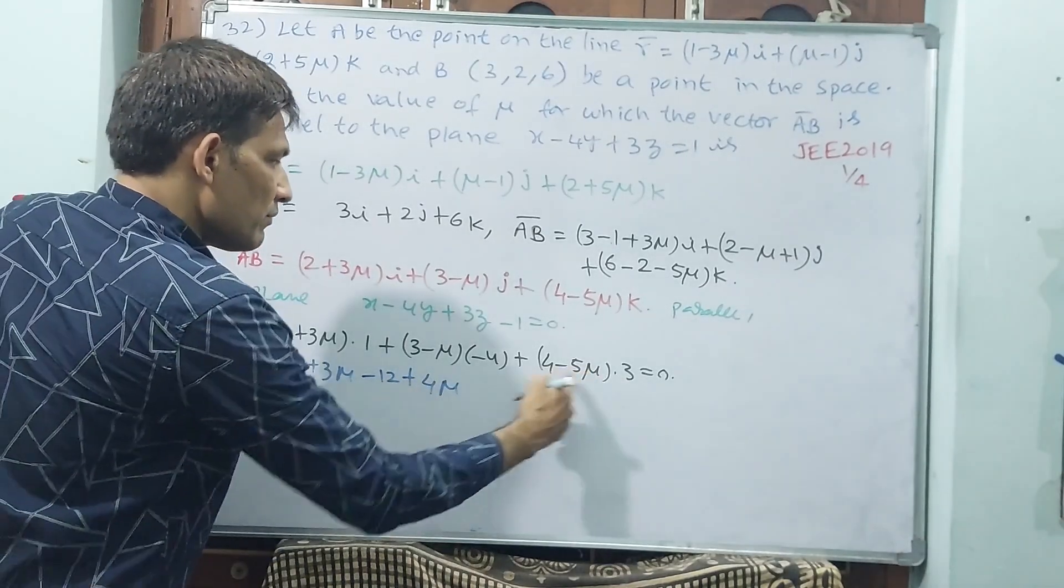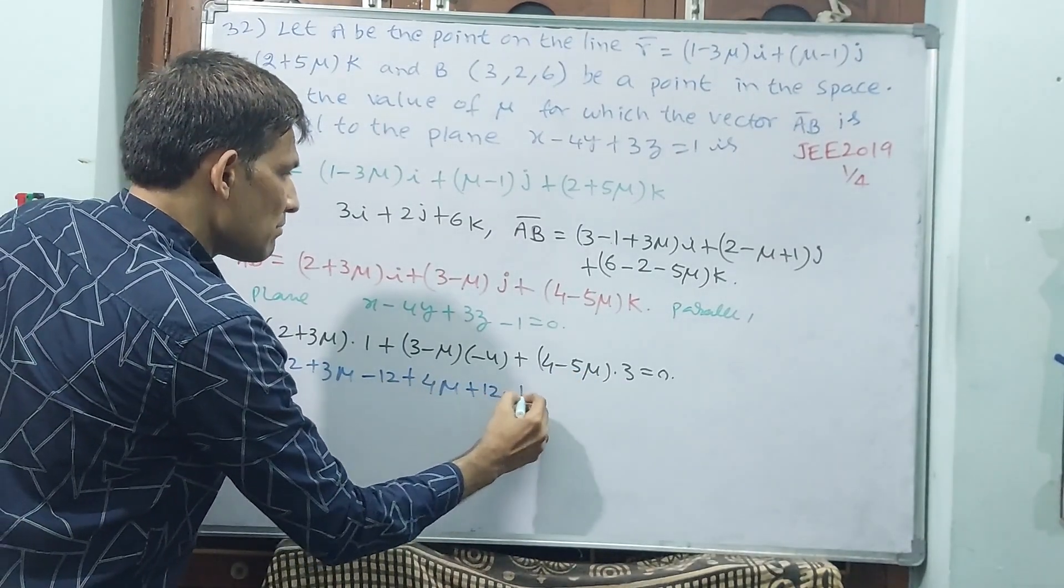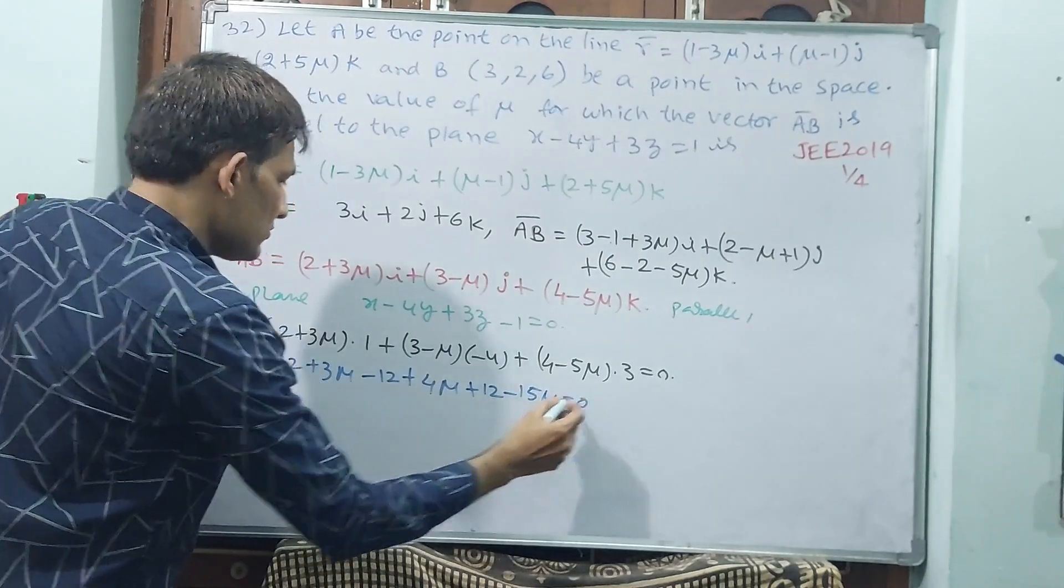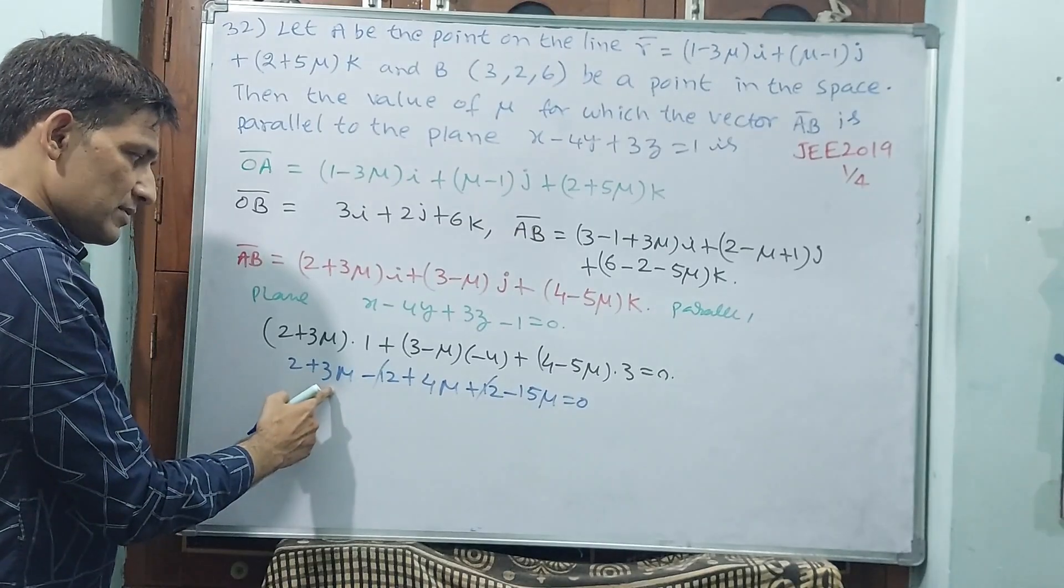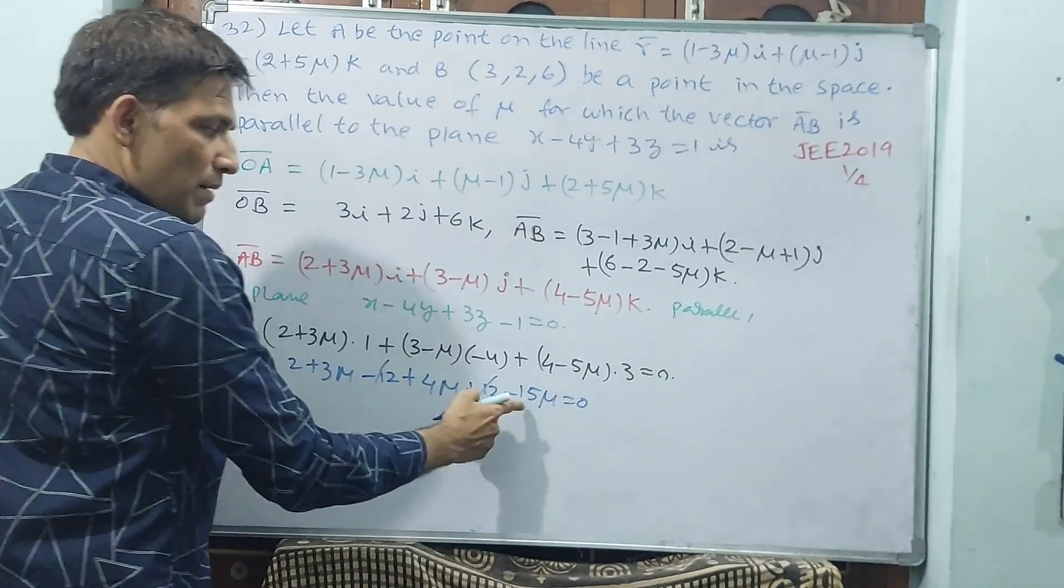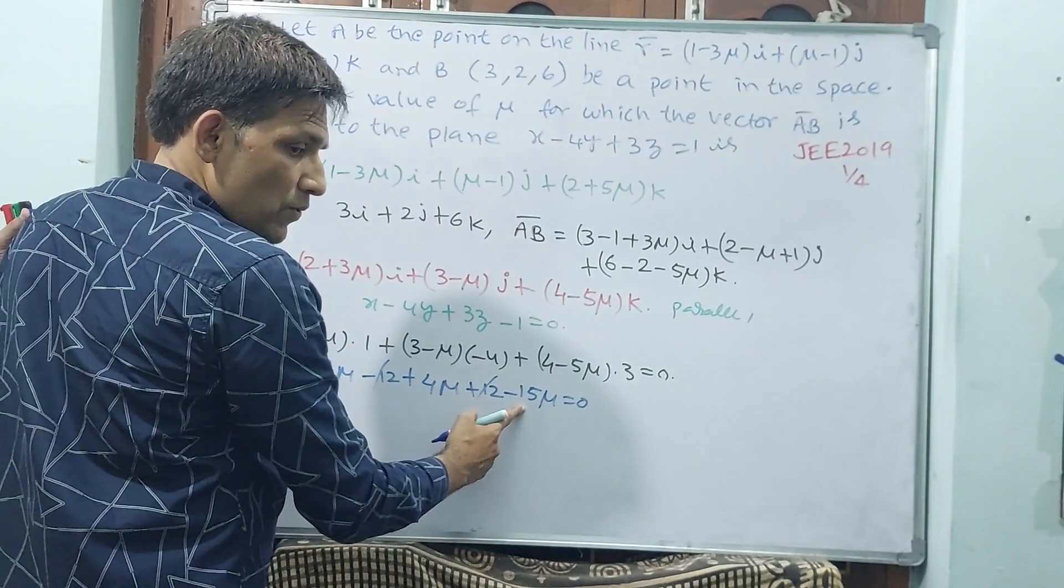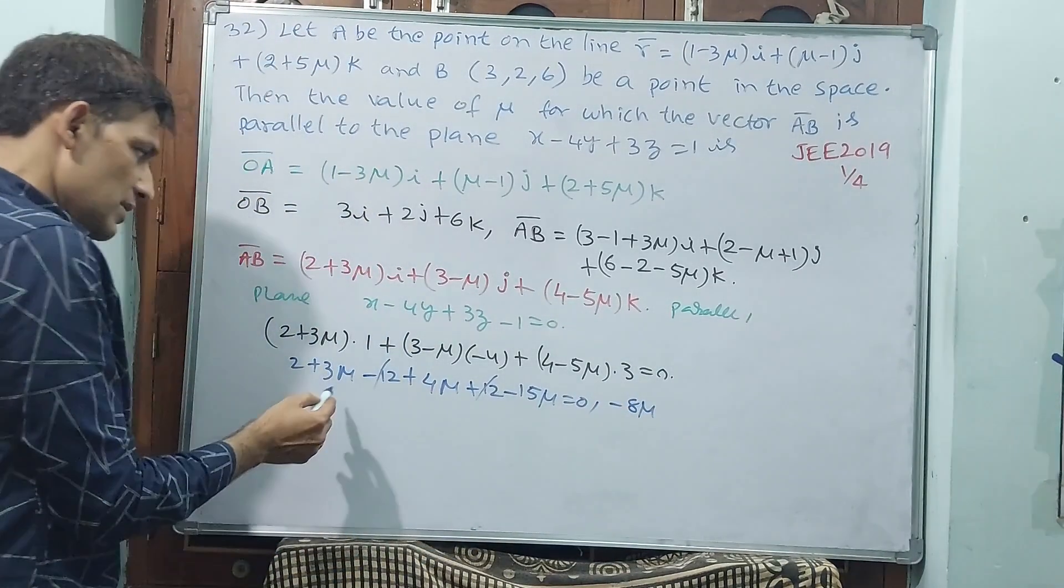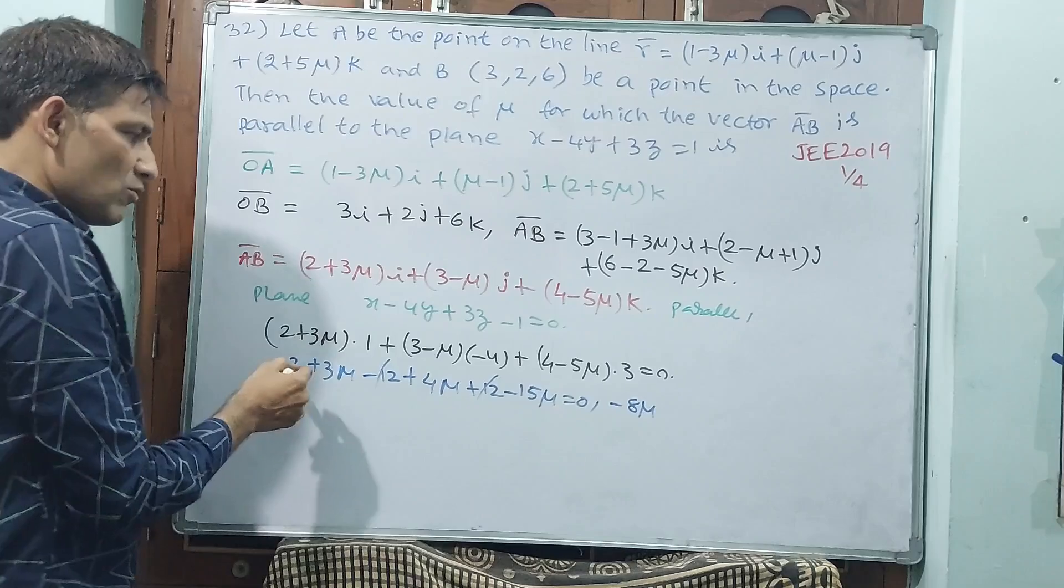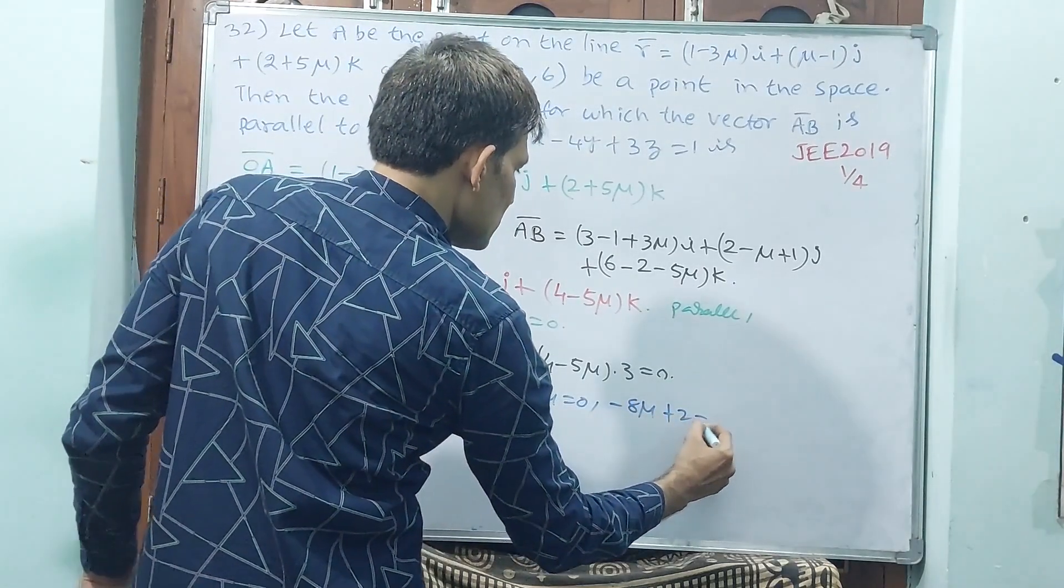Plus 4μ minus 15μ is equal to 0. See, plus 2 minus 4 straight away you cancel.